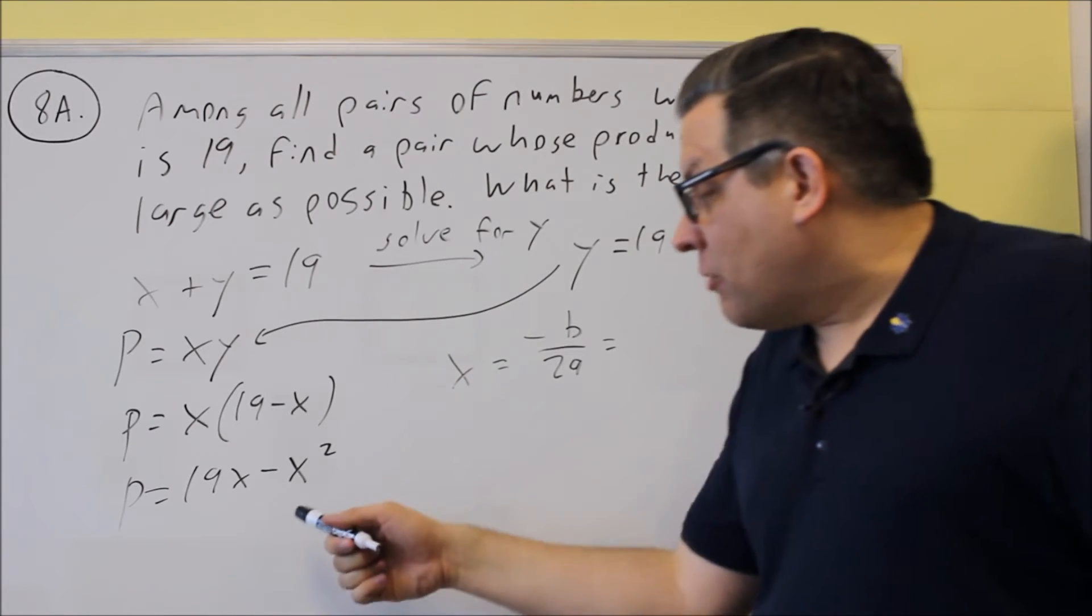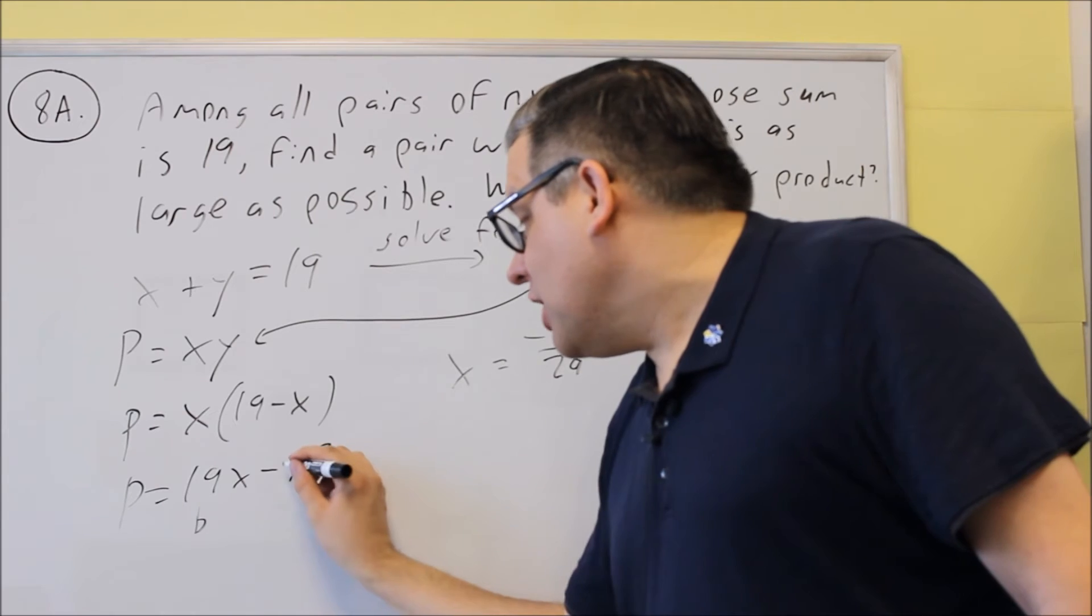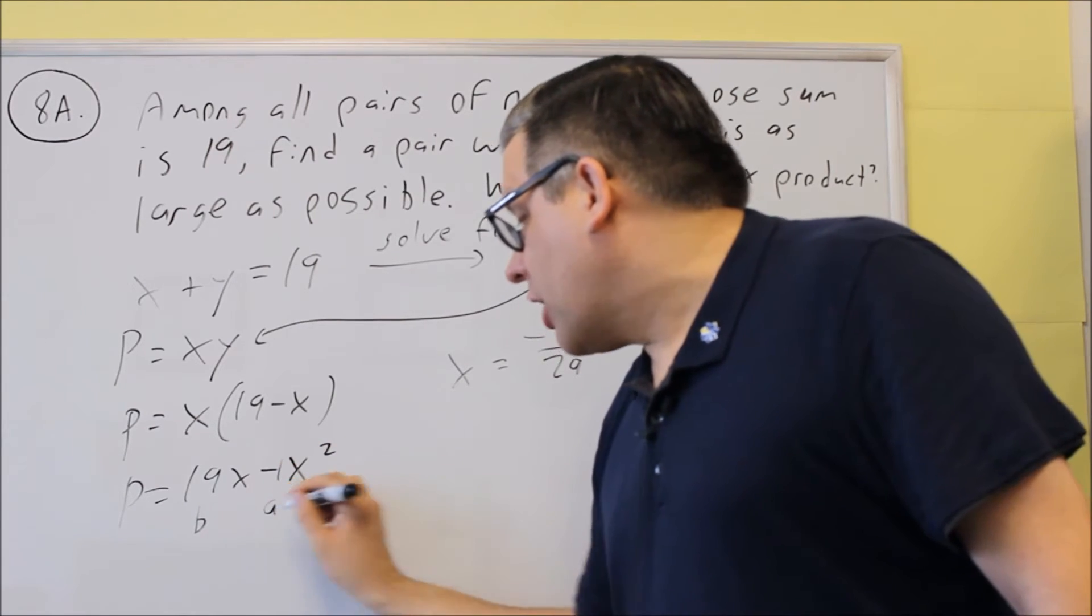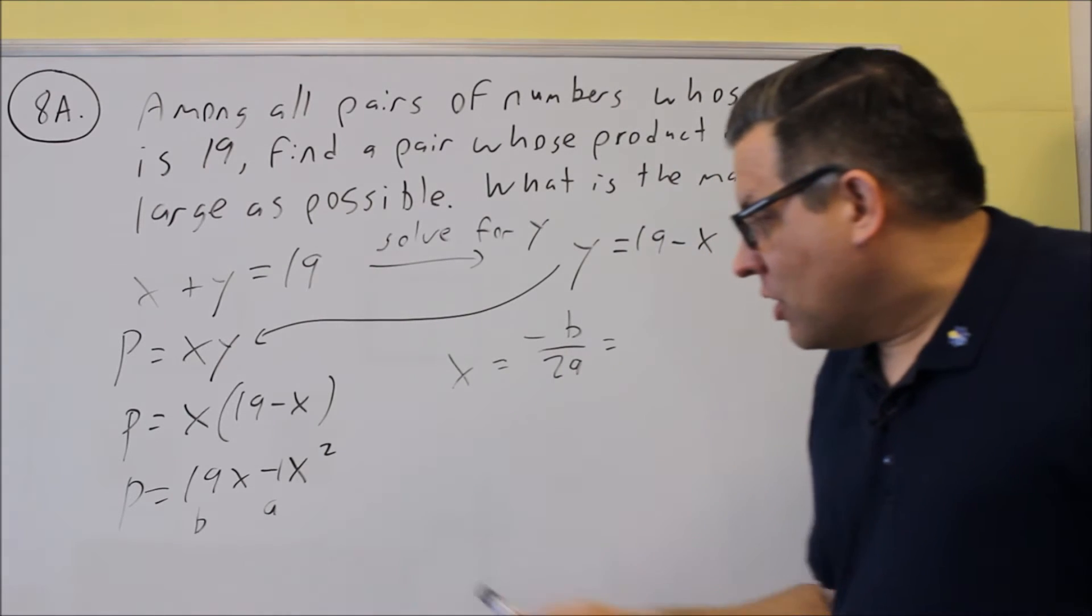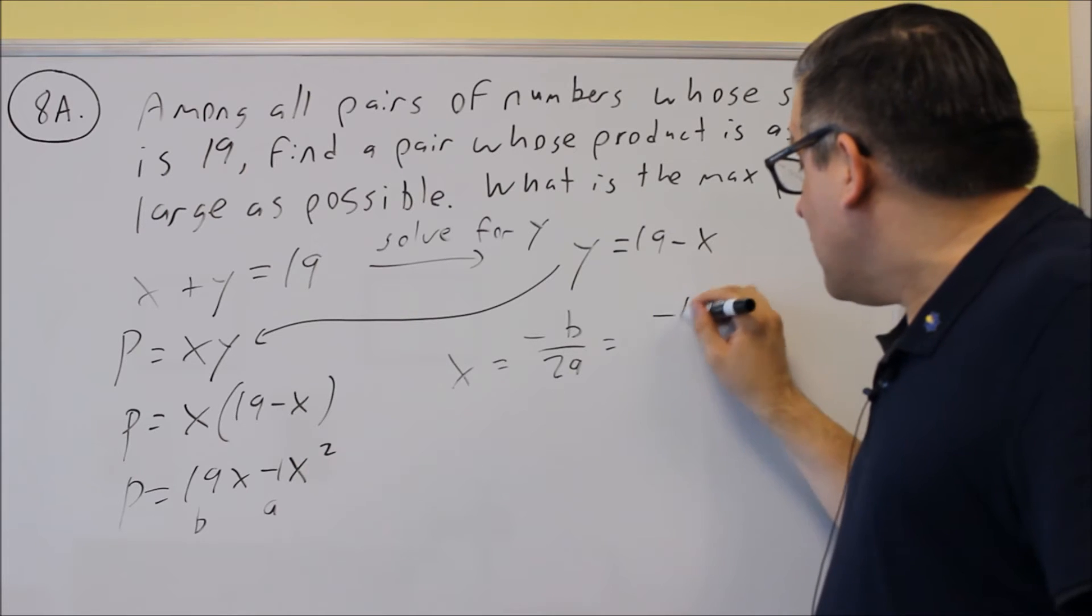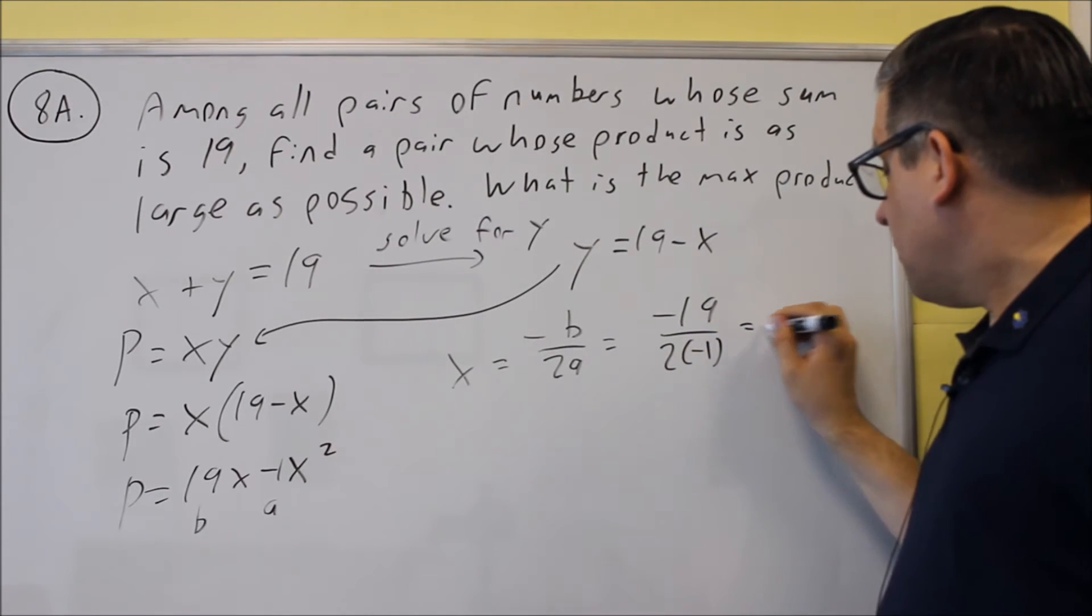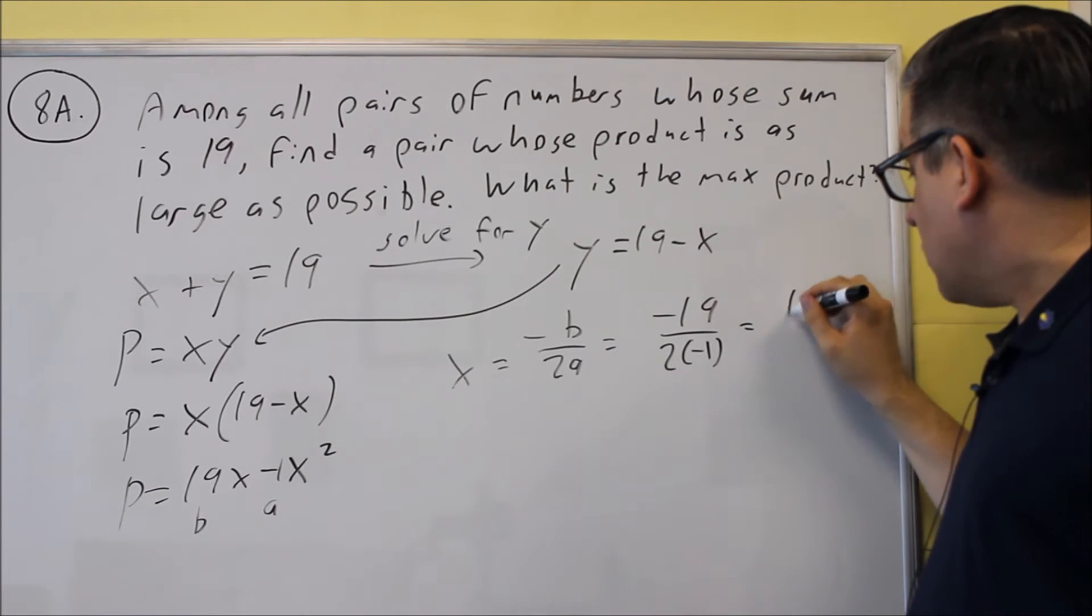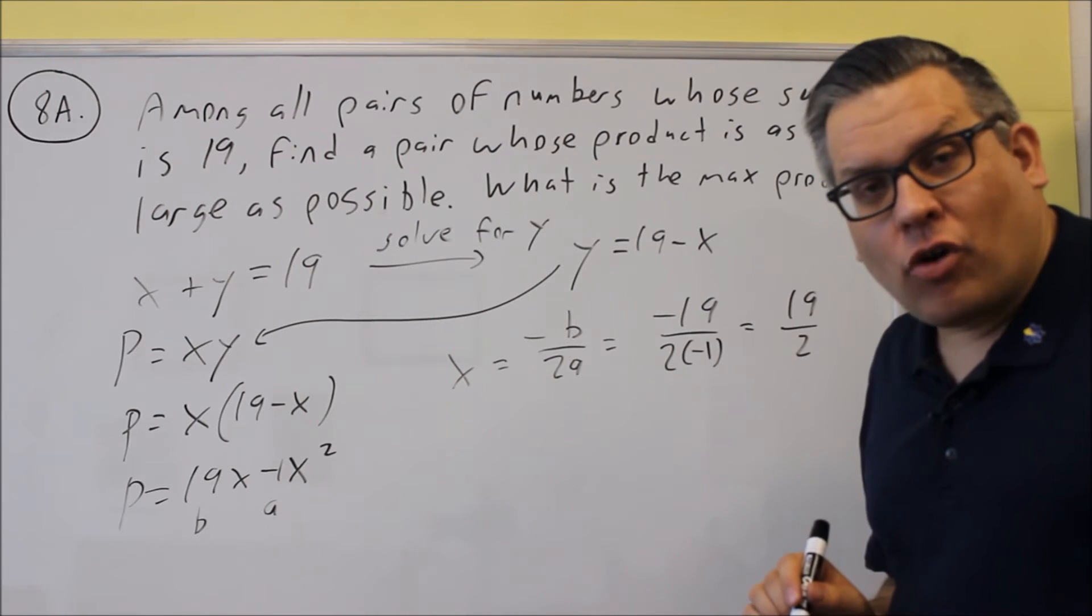Negative b, the b, now be careful when you have these labeled. Your b is actually going to be the 19 and the little negative one that comes in front of the x squared. That's your a. a is always in front of the squared variable. Alright, so we have, for this, negative 19 over 2 times negative 1. And the negatives are going to cancel and we get 19 halves, so we'll leave our answer in the fraction form.